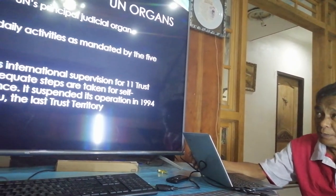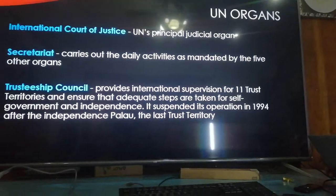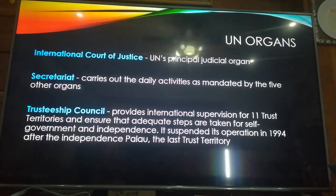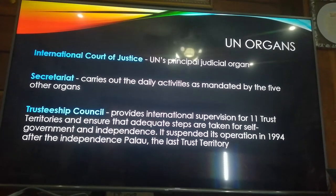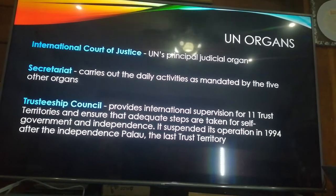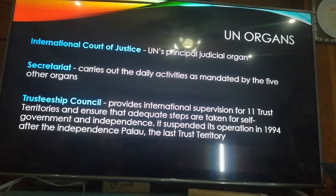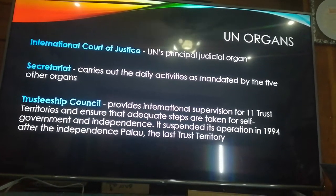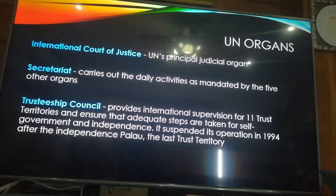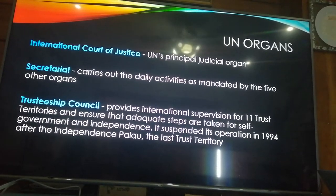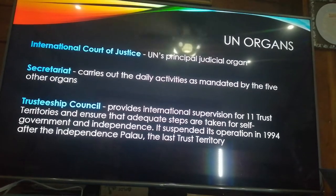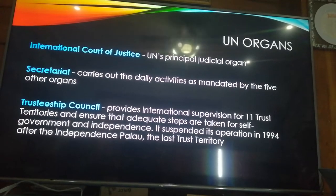If there is a problem between one country and another, your country can file a case against that country in the International Court. For example, around 1998, there was a problem between the Philippines and China. The Philippines could not file a case against China in the Philippine Supreme Court because it would be biased, and China likewise could not file in their own courts. To avoid bias, the case was filed in the International Court. According to the result, the Philippines won the case.